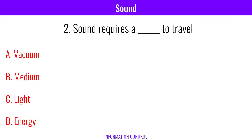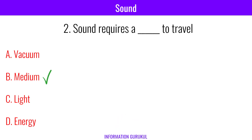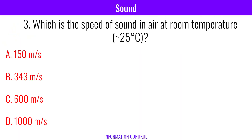Sound requires a medium to travel. Which of the following is the speed of sound in air at room temperature? 343 meters per second.